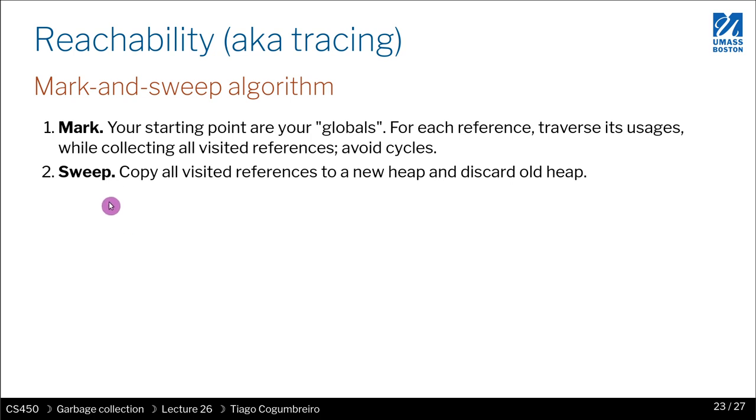Because if you might have an example where you have a reference pointing to itself, if that cycle of potentially many references is not reachable via your initial set of references, you can safely discard them. And we're going to see an example of that.